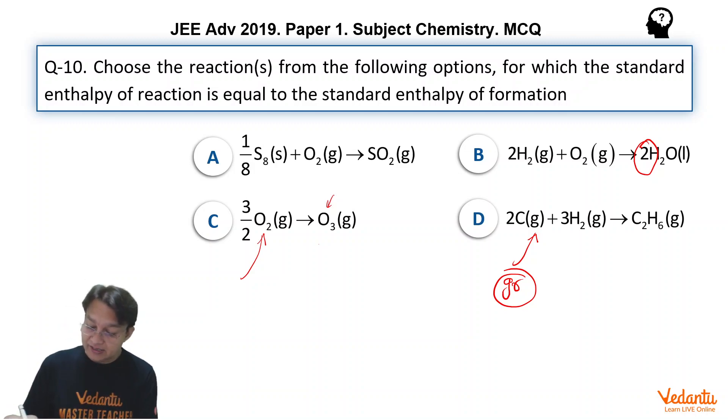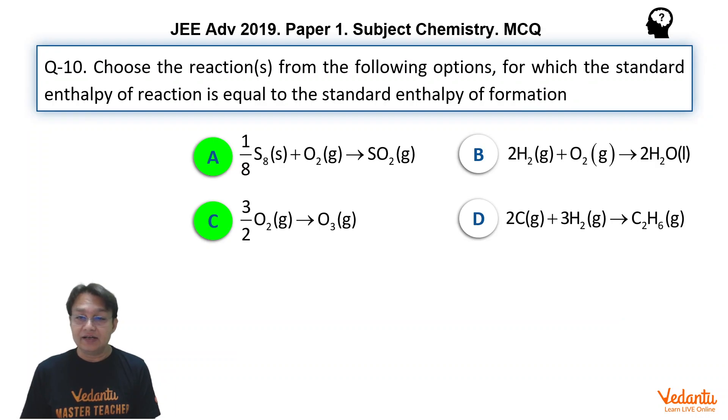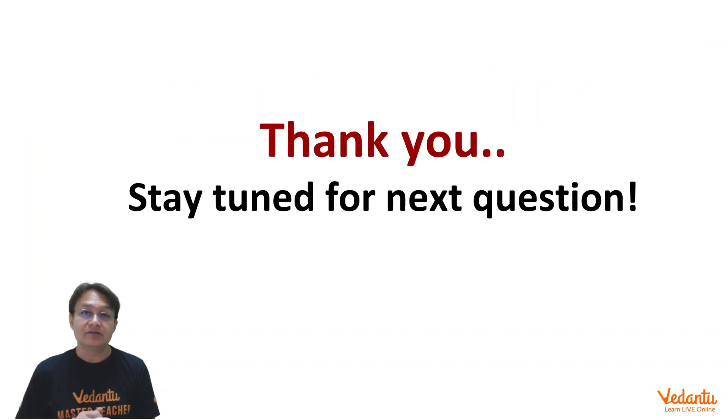So, our correct answers or options are C as well as A. So, A and C are the correct options. And this is the valid explanation for it. Stay tuned for other questions and the detailed solutions. Thanks for watching.